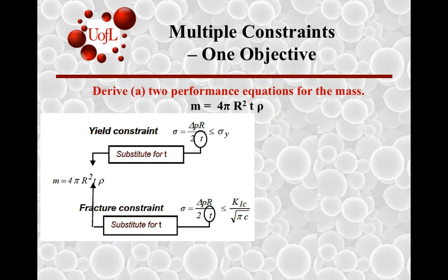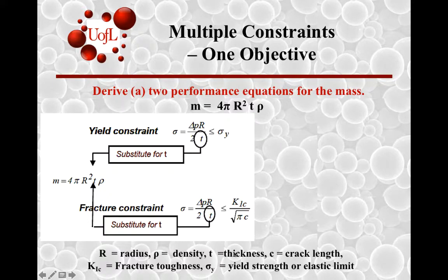And then if you eliminate T, you will be able to use that in the objective function of minimizing mass. Use this over here, and then you will be able to get one equation for mass which will be dependent upon the density and the yield strength. Here, R is the radius, rho is density, T is the thickness, c is the crack length, K_IC is the fracture toughness, and sigma y is the yield strength.